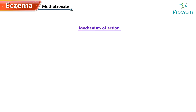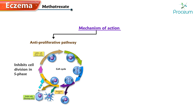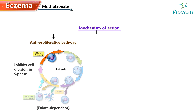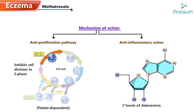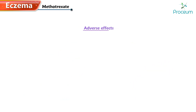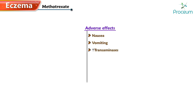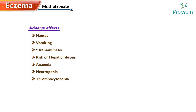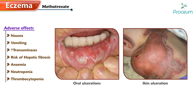Next, let's talk about methotrexate. Its mechanism of action operates through the anti-proliferative pathway, inhibiting cell division in the S-phase, which is folate-dependent. It also exerts anti-inflammatory action due to an increase in levels of adenosine. Adverse effects include nausea and vomiting, elevated transaminases, a risk of hepatic fibrosis, anemia, neutropenia, thrombocytopenia, oral ulcerations, and skin ulceration.